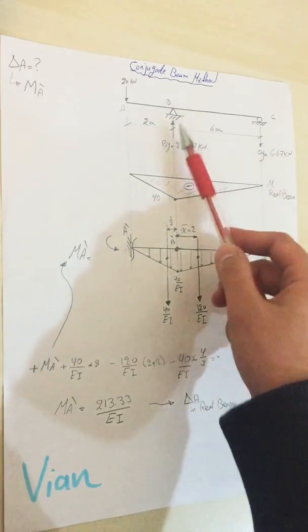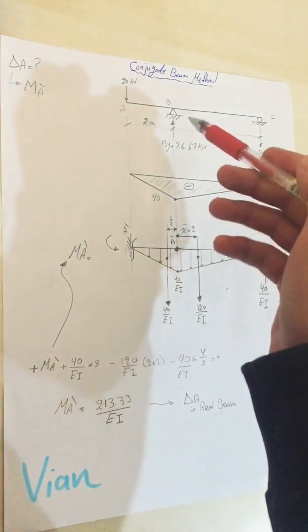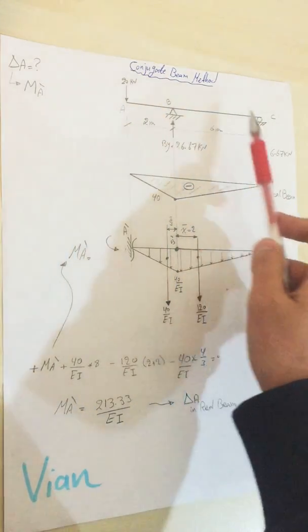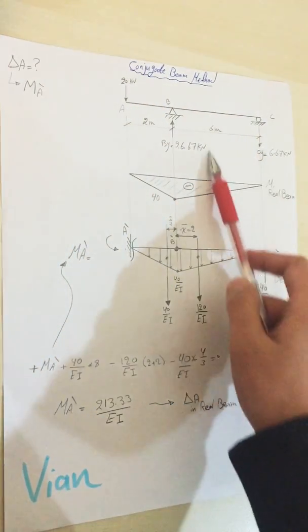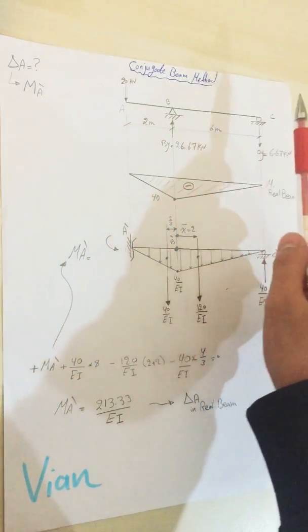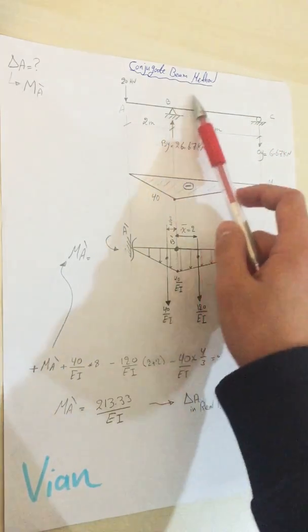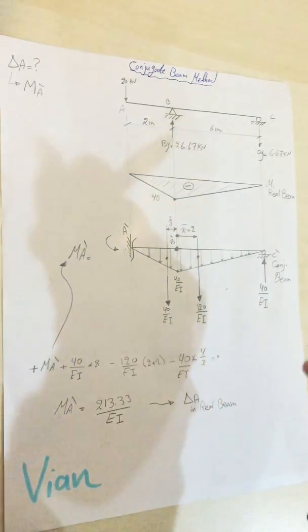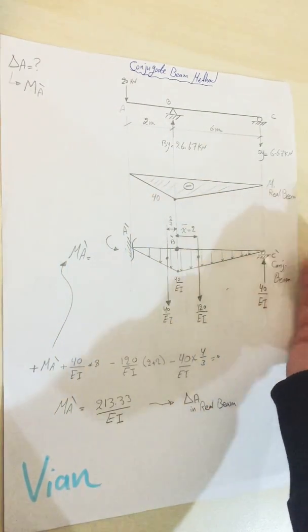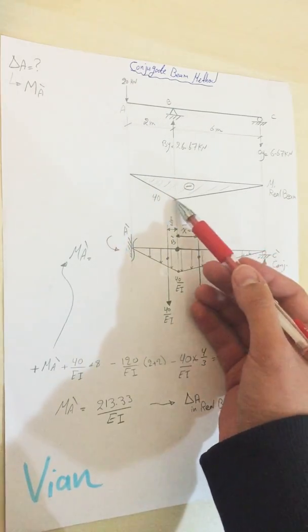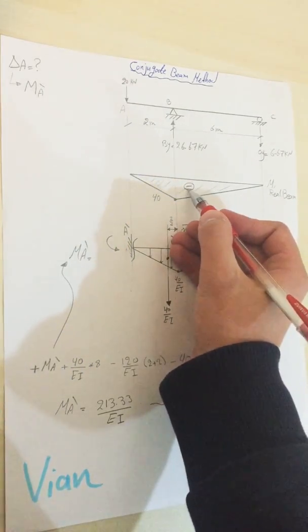I start by measuring the quantity of the support for the roller and the hinge or pin support. By summation moment about B, I will find CY which will be clockwise, and then summation moment about C to find BY which is clockwise as well. I will draw the moment diagram for the real beam which will be 40 downward in negative sign.